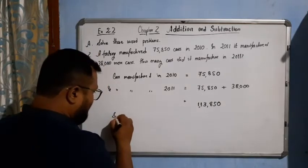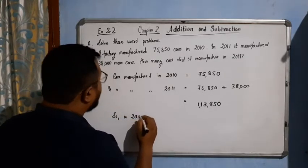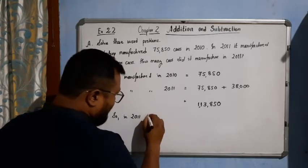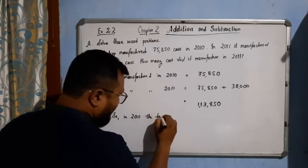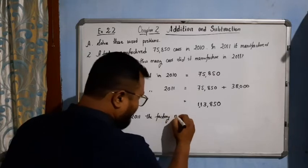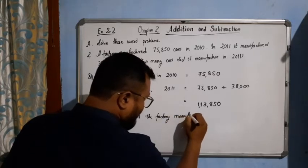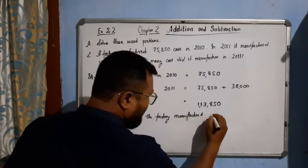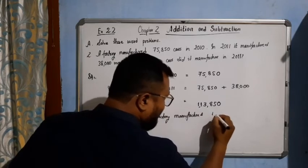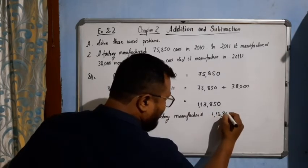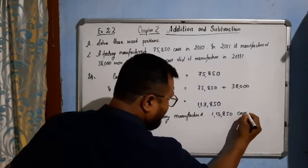So in 2011 the factory manufactured 1,13,850 cars.